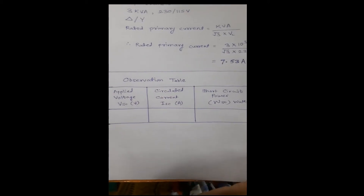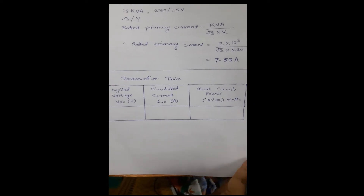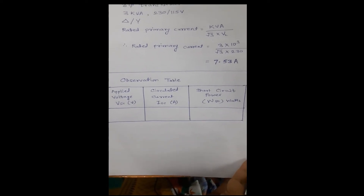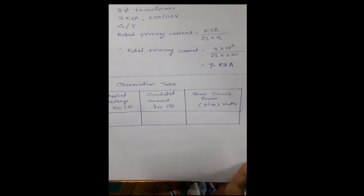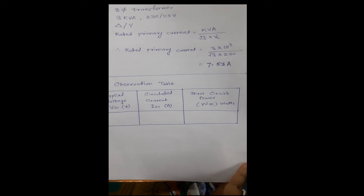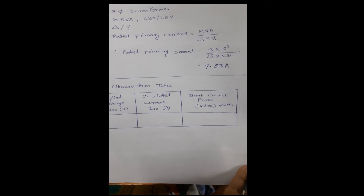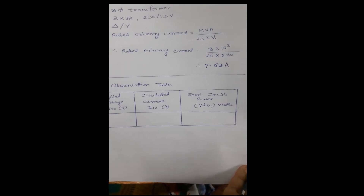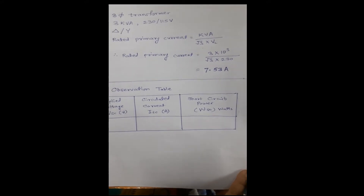This is the observation table. After performing this test you have to note down the applied voltage Vsc, the short circuit current Isc, and the short circuit power Wsc.